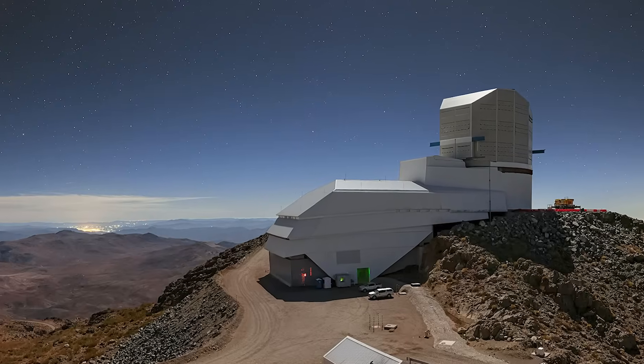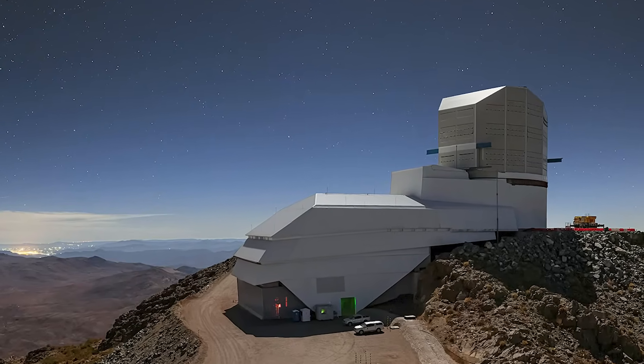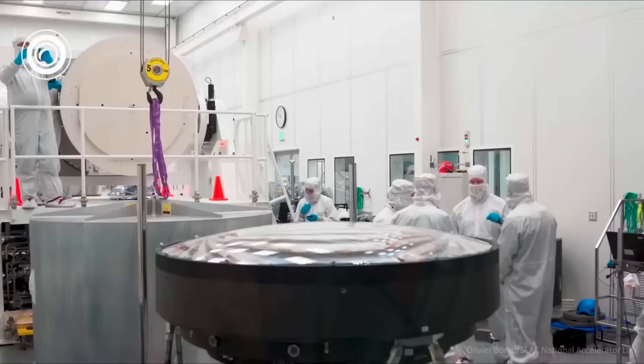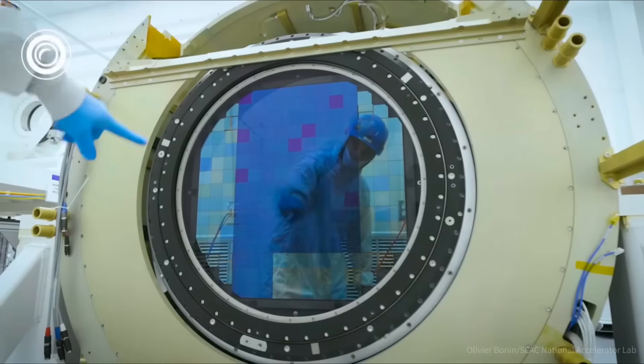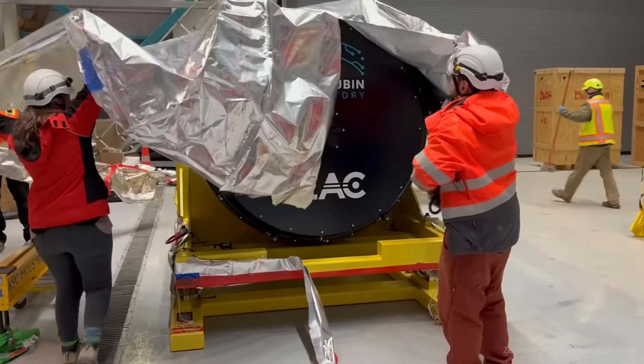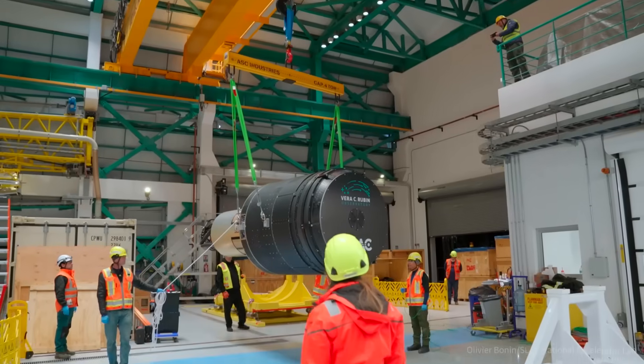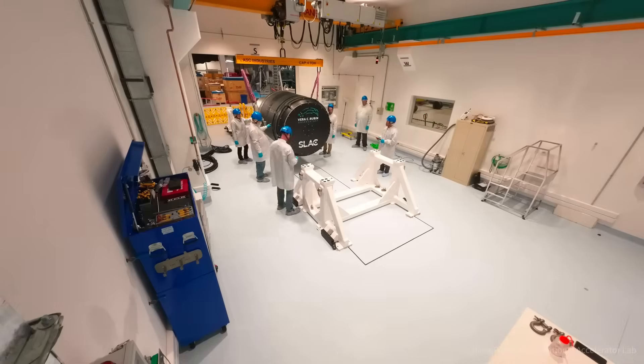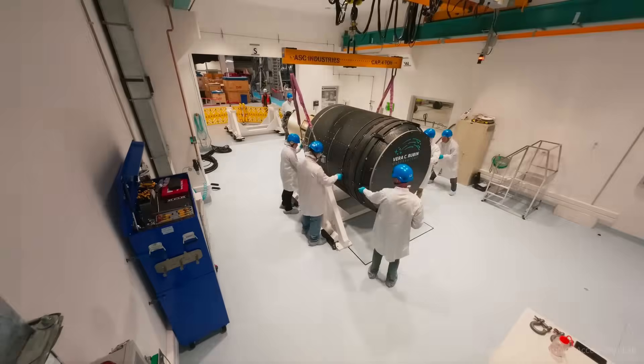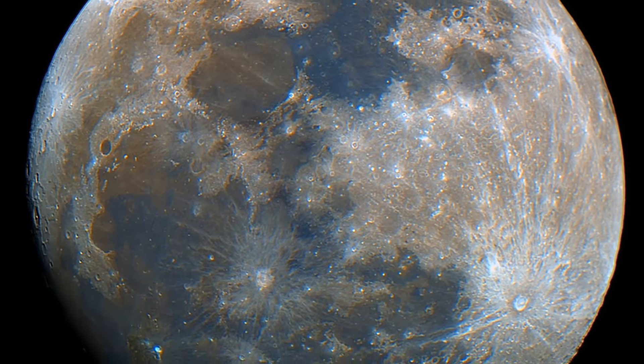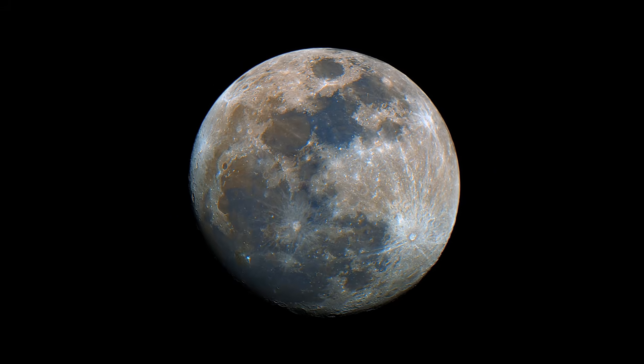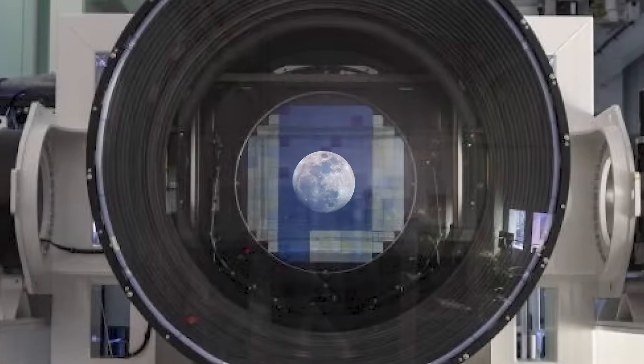Let's also talk about the field of view and the image scale. First, the field of view. Rubin has an enormous 3,200 megapixel camera and with that camera, it captures 9.6 square degrees of sky in a single 15-second photo. That's huge. For context, the full moon is about half a degree wide, 0.5 degrees in size. So Rubin's field of view of the night sky is similar to fitting around 40 full moons into one single image.